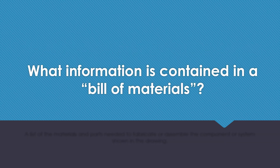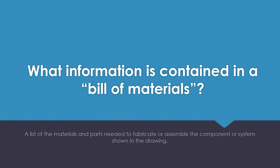What information is contained in a bill of materials? A list of the materials and parts needed to fabricate or assemble the component or system shown in the drawing.